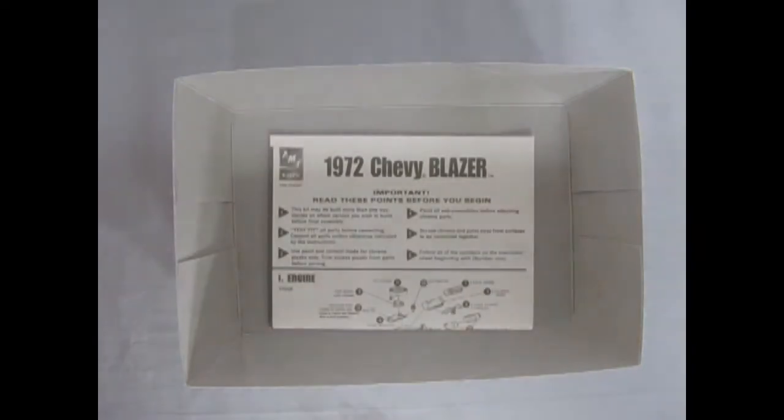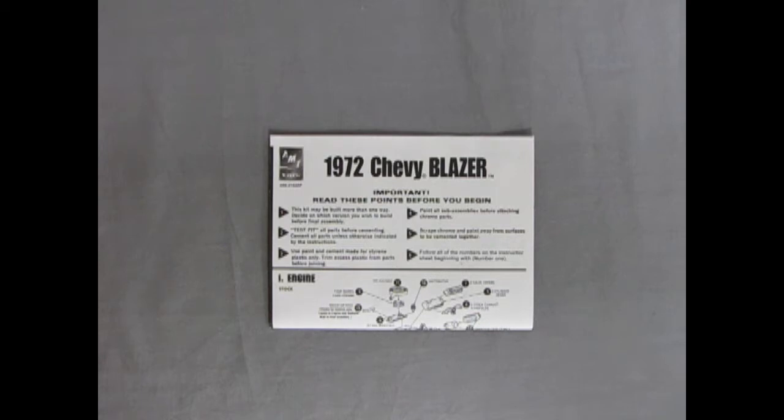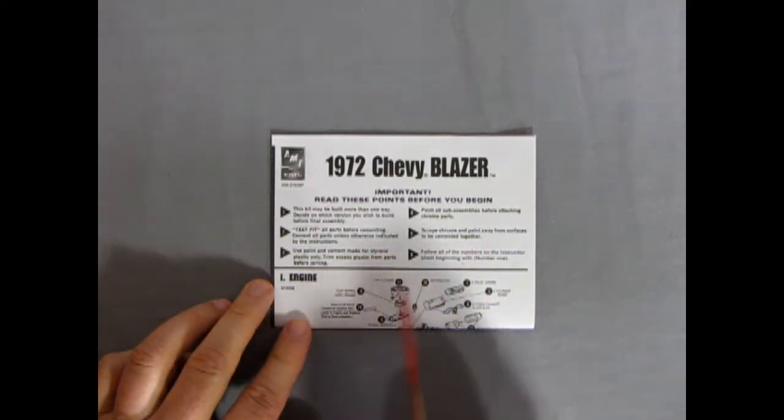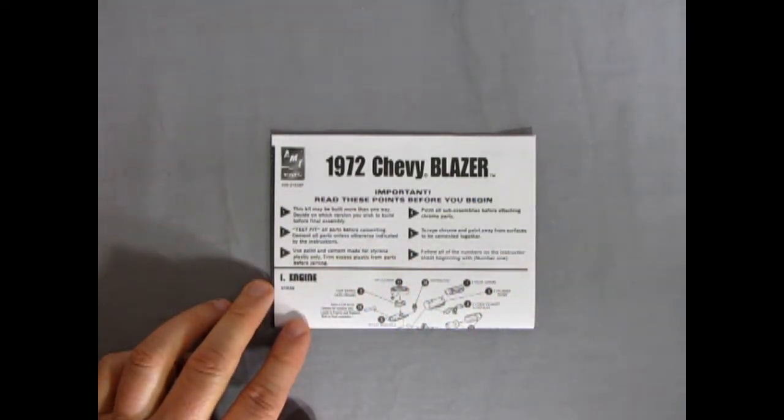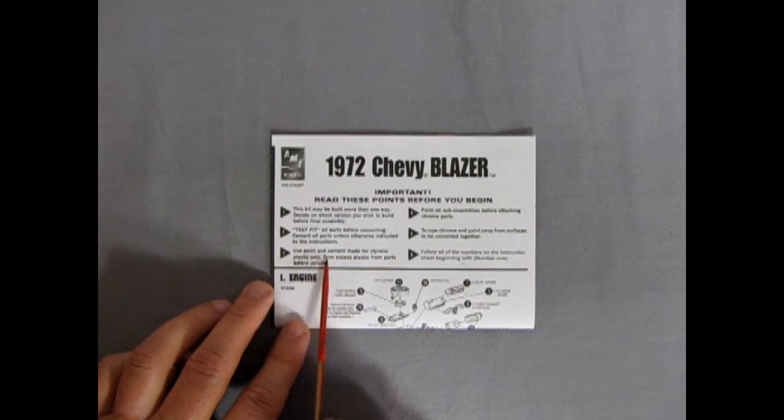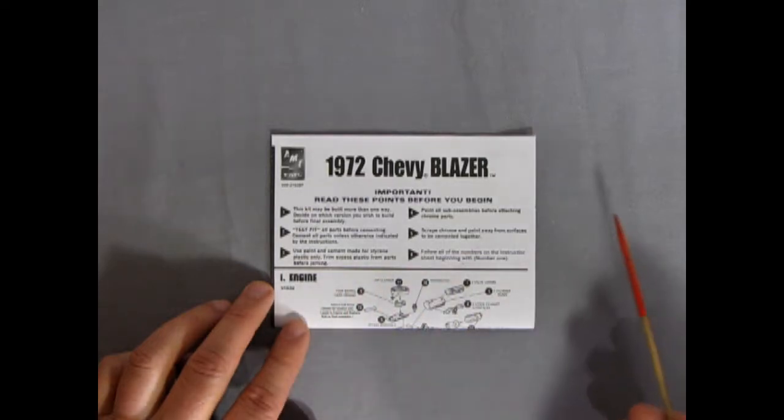Here we have our 1972 Chevy Blazer instruction sheets, and it does say important, read these points before you begin. There's only six, so that's not too many points. This kit may be built more than one way, decide on which version you want to build for final assembly. Test fit all parts before cementing. Cement all parts unless otherwise indicated by the instructions. Use paint and cement made for styrene plastic only. Trim excess plastic from parts before joining. Paint all sub-assemblies before attaching chrome parts. Scrape chrome and paint away from surfaces to be cemented together.